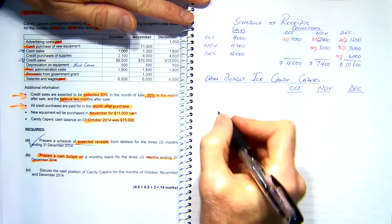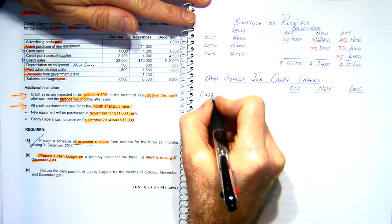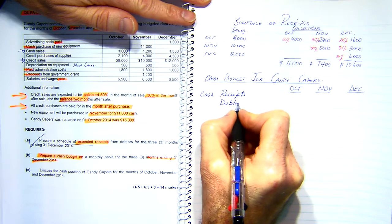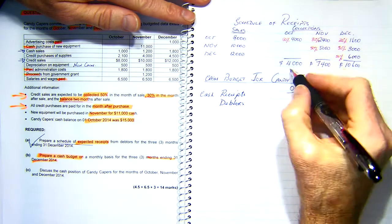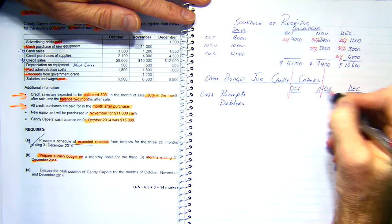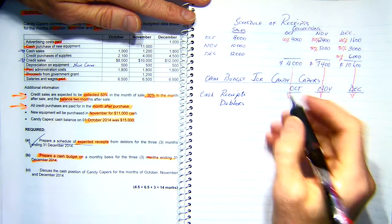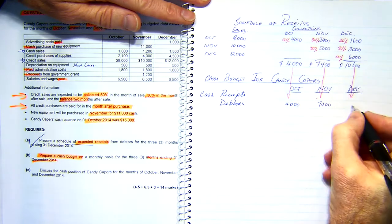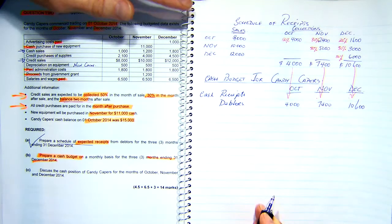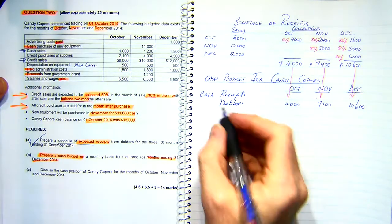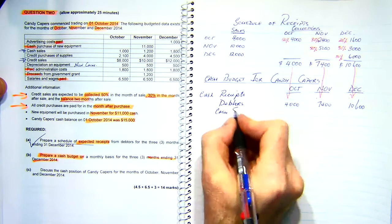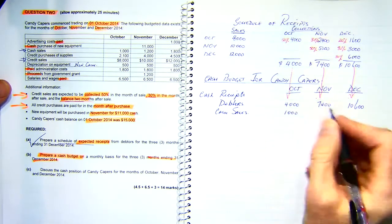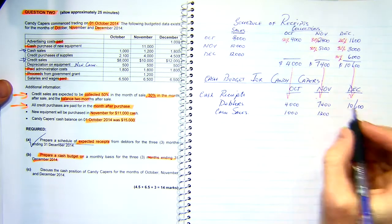Now the first thing I want to do is my cash receipts. I've got cash receipts here, and I'll just put in debtors. My debtors figures just come down from here — I've got $4,000 in October, $7,400 in November, and $10,600 in December. We also had some cash sales: $1,000, $1,200, and $1,800.